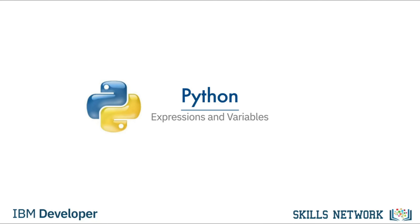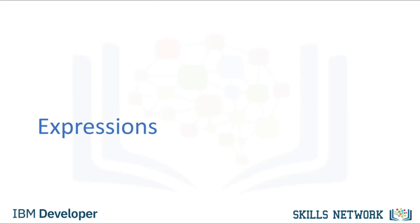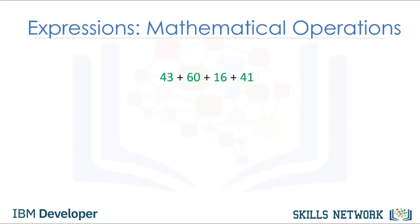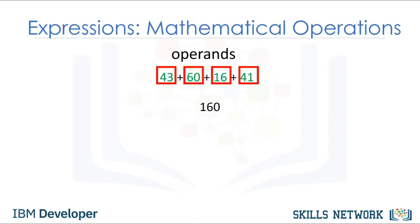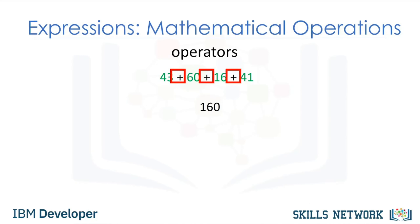In this video, we'll cover expressions and variables. Expressions describe a type of operation that computers perform. Expressions are operations that Python performs — for example, basic arithmetic operations like adding multiple numbers. The result in this case is 160. We call the numbers operands, and the math symbols, in this case addition, are called operators.